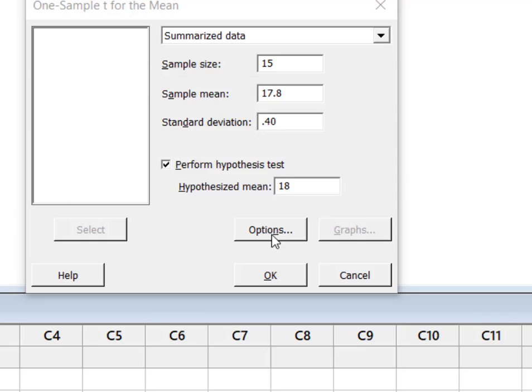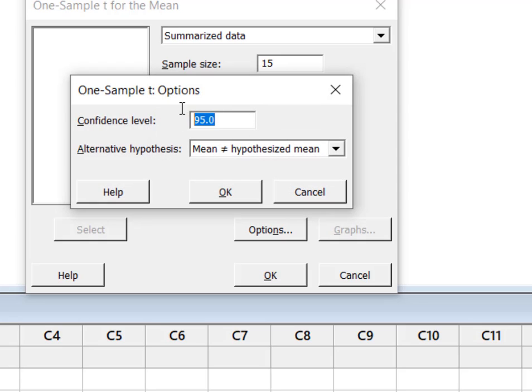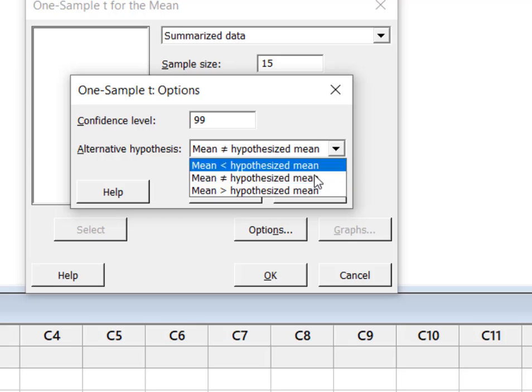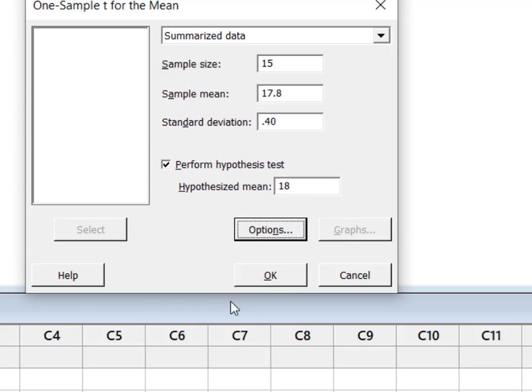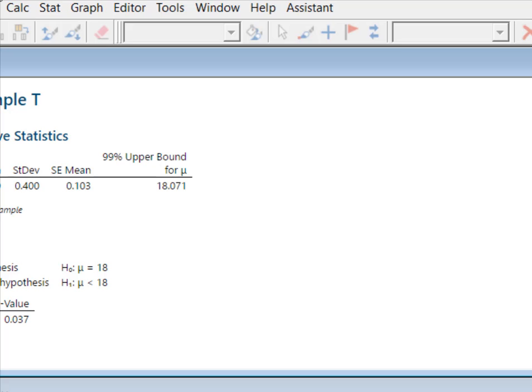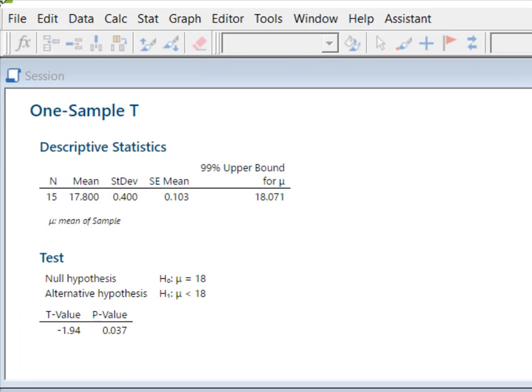And now don't forget we've got to go to options. Our confidence level—she was alpha 0.01, which gives me a 99 percent confidence interval. We looked at that alternative hypothesis and it was less than. So we're going to hit OK twice. Minitab is going to give us our output.